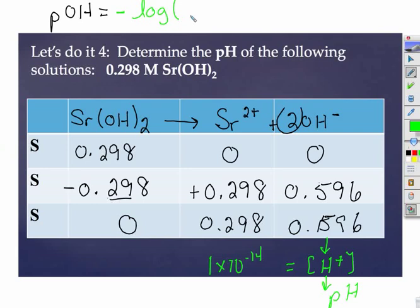So pOH is minus the log of my OH-. That little p in front says take minus the log of the value that follows. So pOH is 0.225. I have three sig figs here, so I get three places after my decimal point. Now, to find my pH, we employ the relationship that pH plus pOH is equal to 14.